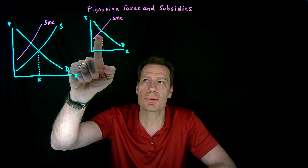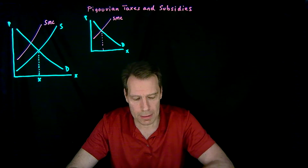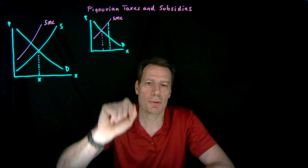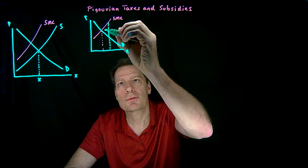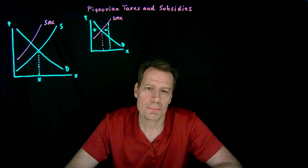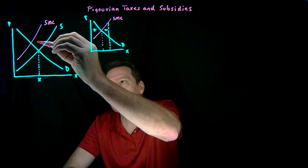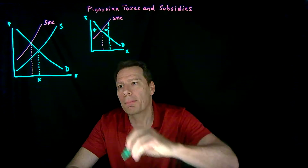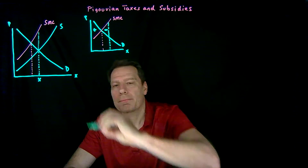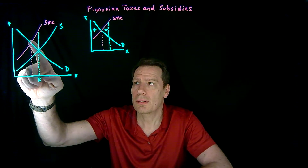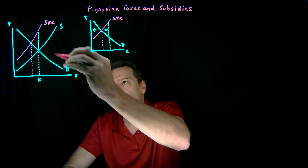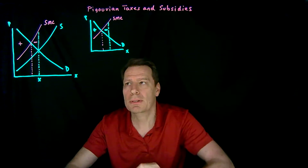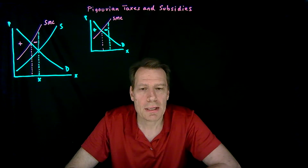Social surplus would be maximized at the intersection of those two curves. All the way up to that point, social marginal cost is less than social marginal benefit. But if we produce beyond that point, we would be producing goods where the social marginal cost is greater than the social marginal benefit, and we would get a negative surplus area in addition to the positive area. So putting this into the picture, the socially optimal quantity occurs at the intersection of social marginal cost and demand, giving us positive surplus here but also a negative triangle, which becomes a deadweight loss.